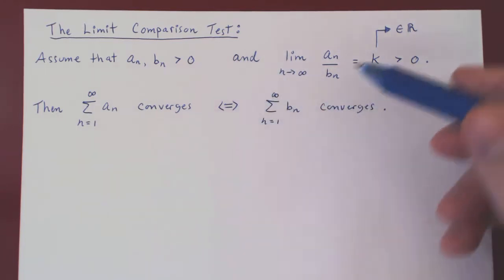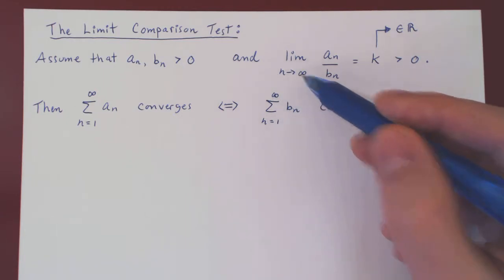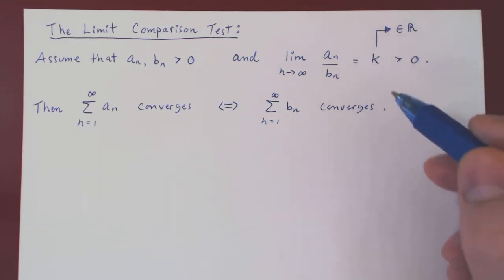And the only other assumption is that the ratio, an over bn, as n tends to infinity, equals some positive real number. So here, k is a real number. k cannot be infinity. So be careful about this.